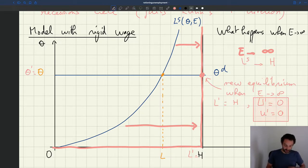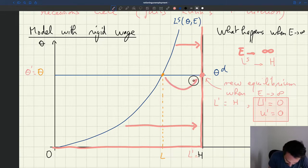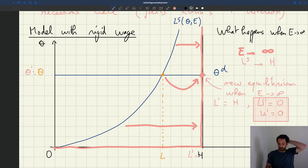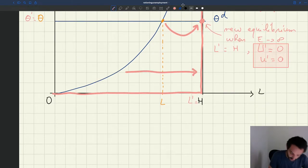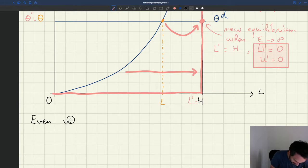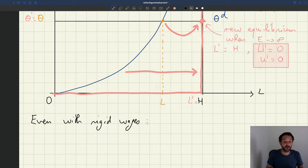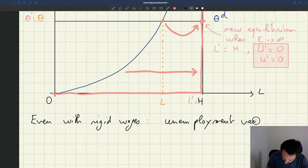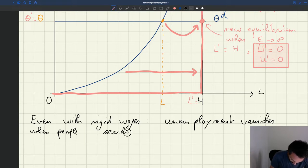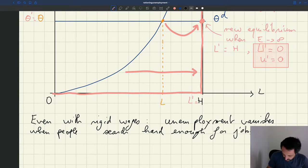So there is no unemployment here. The equilibrium has shifted from here to here, and as a result, unemployment has disappeared. When search effort is strong enough, all the workers are completely absorbed and unemployment disappeared. So what we learn here is that even with rigid wages, unemployment vanishes when people search hard enough for jobs.